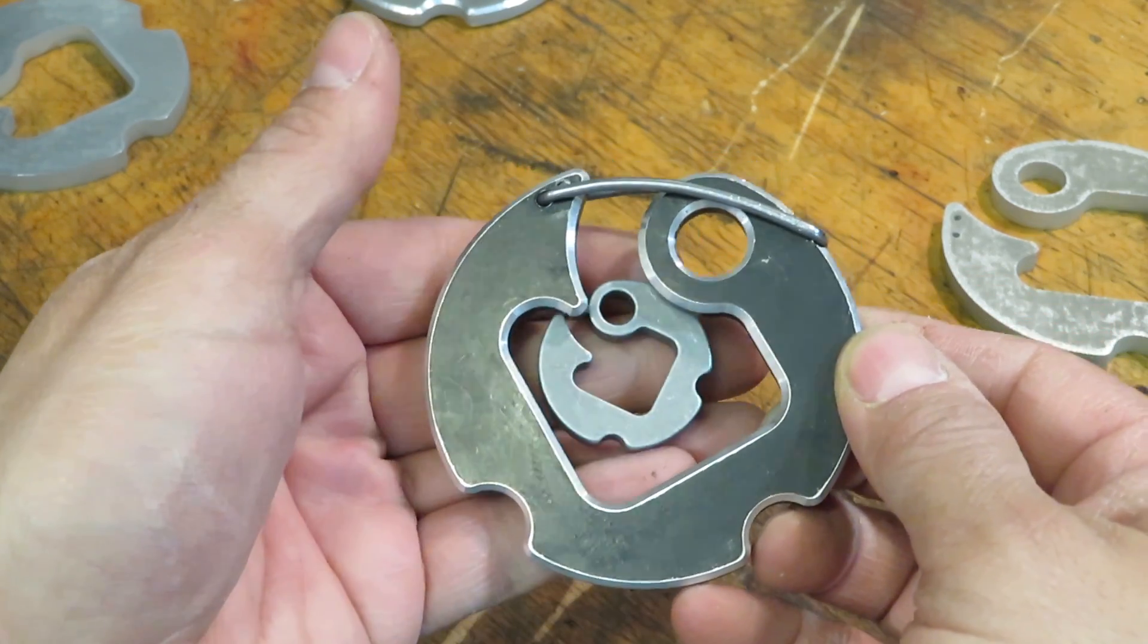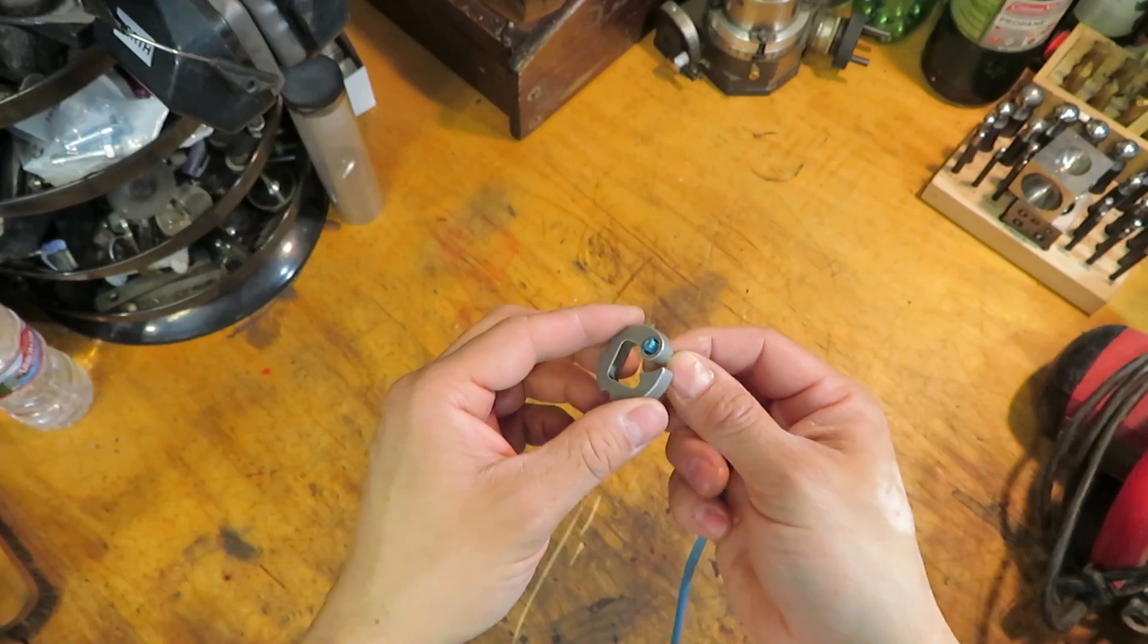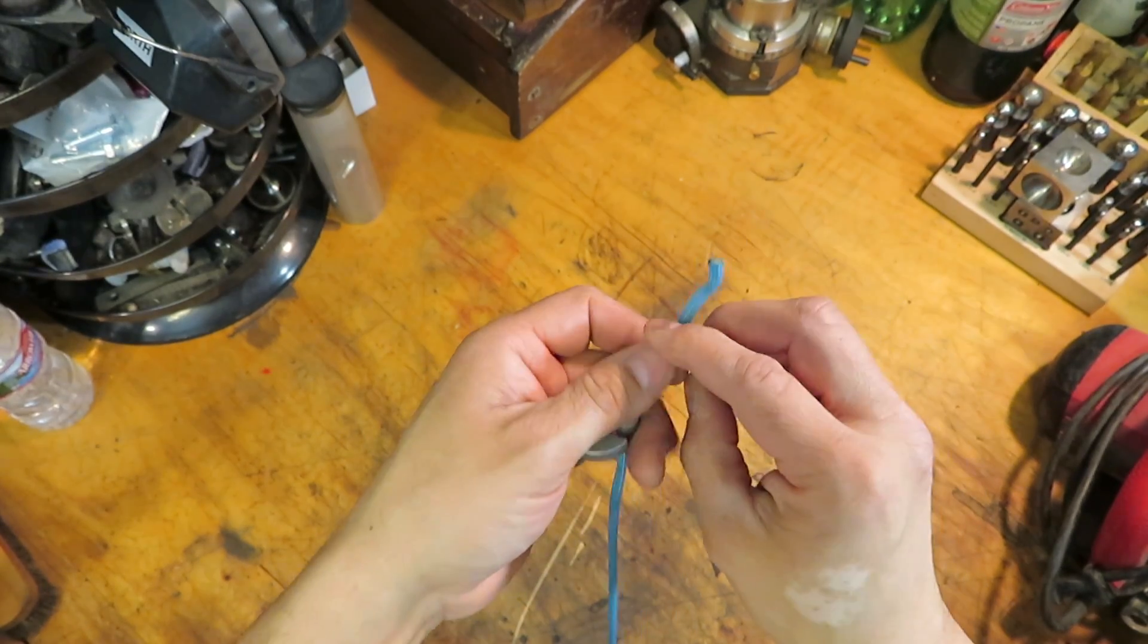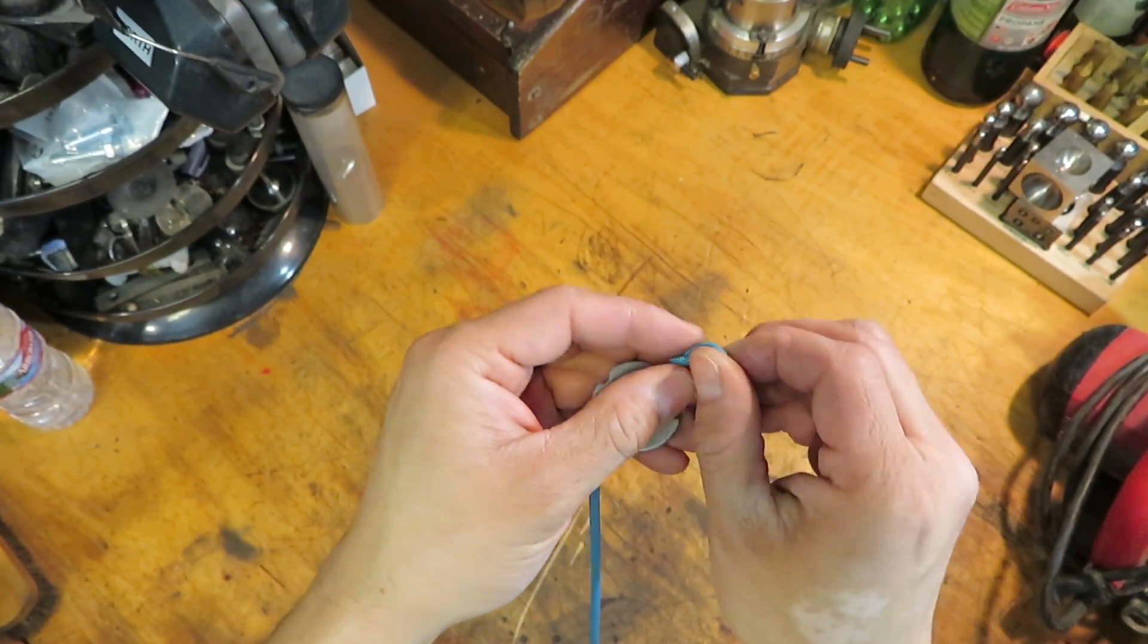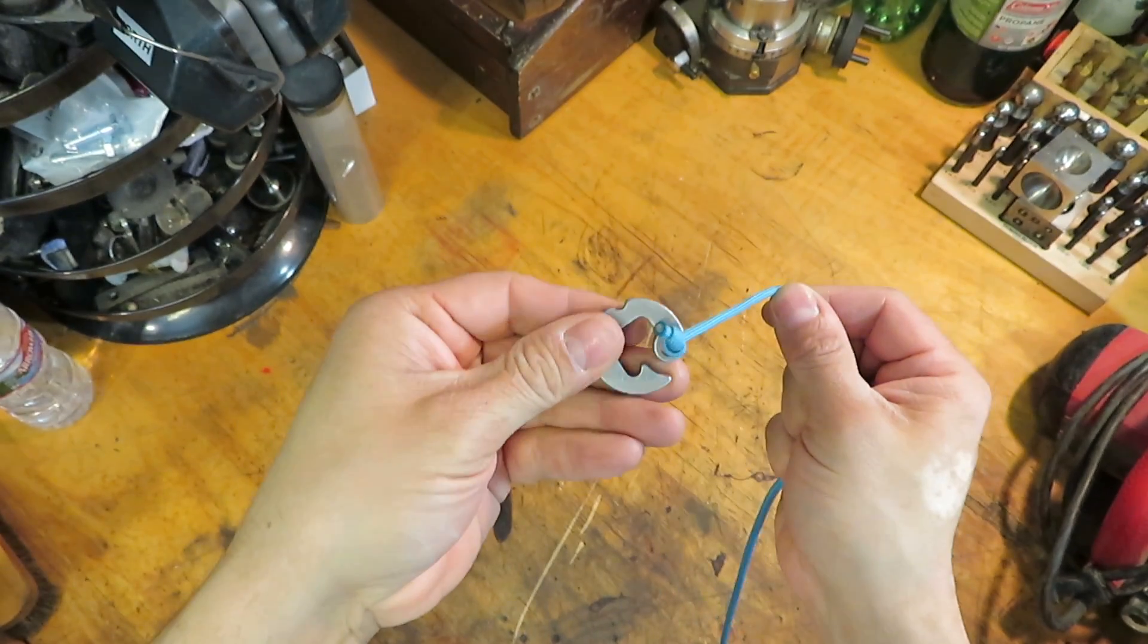So here's an example of how it works. Just thread it through the eye and tie a simple overhand knot. There we go. So it doesn't come back through.